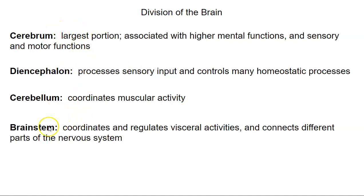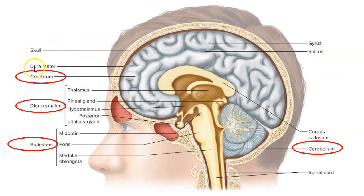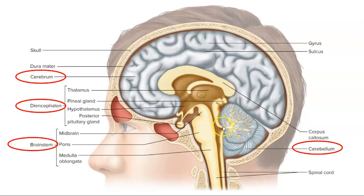We'll look at all four of these, but in this video we'll just focus on the cerebrum. Before we get specifically into the cerebrum, let's look at the four divisions on this picture. The cerebrum includes all of this area here. The diencephalon is in the middle — the thalamus, hypothalamus, and pituitary gland. The brainstem includes the midbrain, the pons, and the medulla oblongata. And then the cerebellum is this structure that looks like a smaller brain.